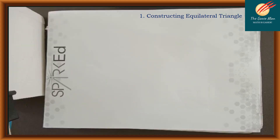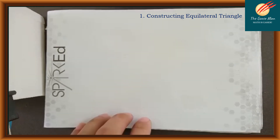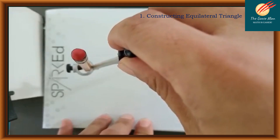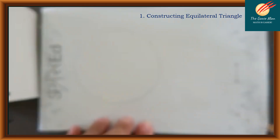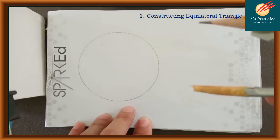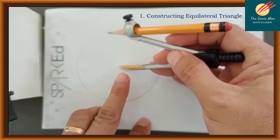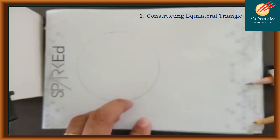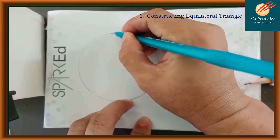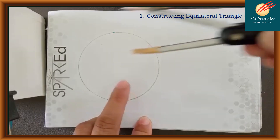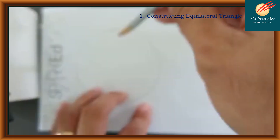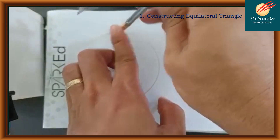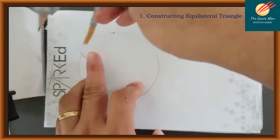For our first construction, let's construct a triangle. The first thing you will do is use a compass to draw a circle. Now you have your circle. Next, you will use the same compass opening to mark your first point on the circle.